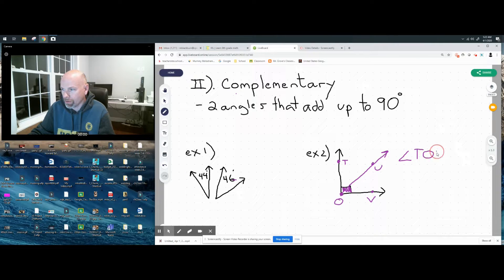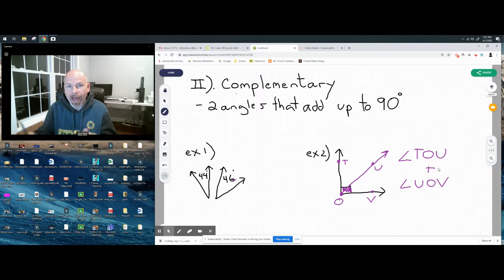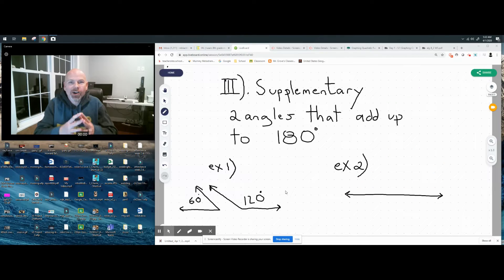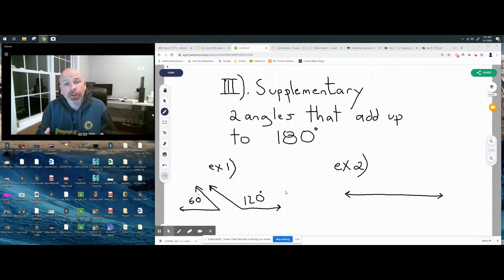What are the two angles that make 90? Wouldn't it be angle TOU and angle UOV? We put them together, they add up to 90. They form a 90-degree angle.